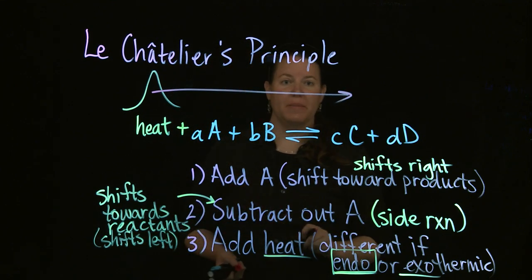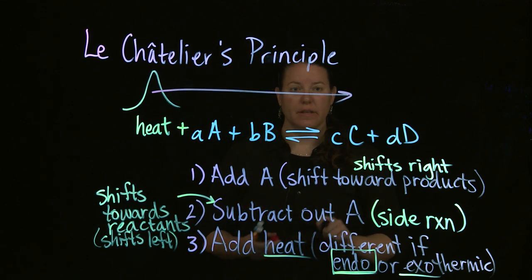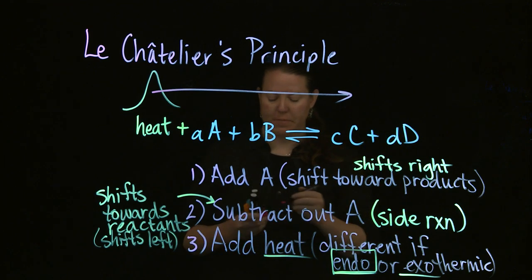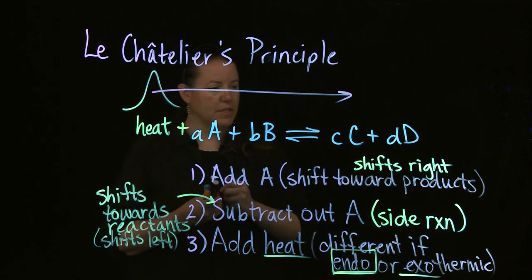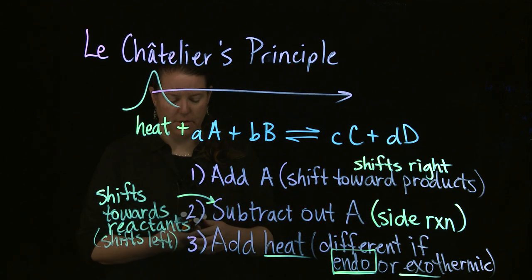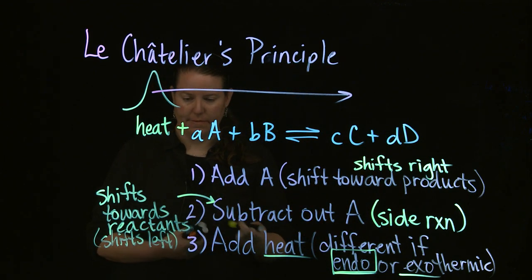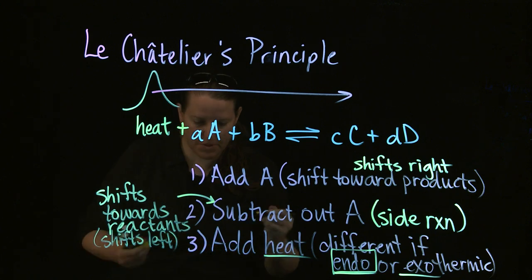To eliminate that hill, the reaction shifts to the opposite side, which means it shifts right — towards the products.